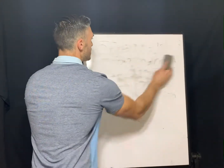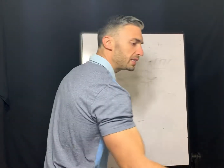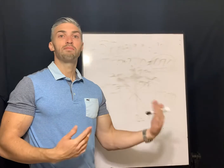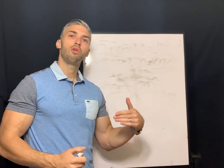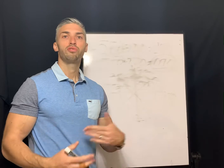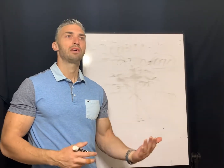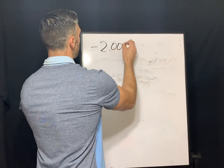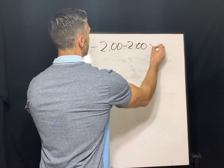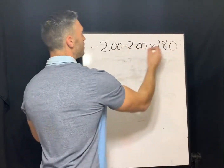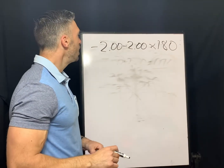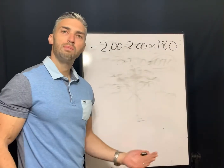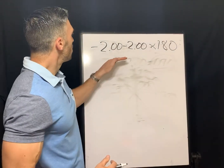A lot of times when people are studying for the NCLE, they leave it at that. They know they have to put things in minus cylinder form but they never go beyond that, and it really doesn't help them work through the other questions they may encounter on the test. So I want to put that same prescription back up on the board — negative 2, negative 2, axis 180 — so we can identify what type of prescription this is.